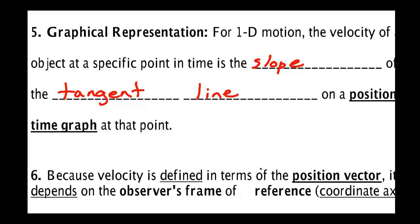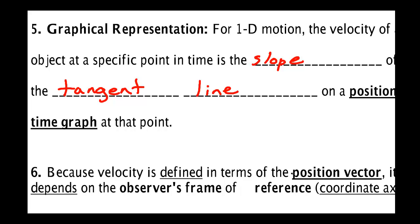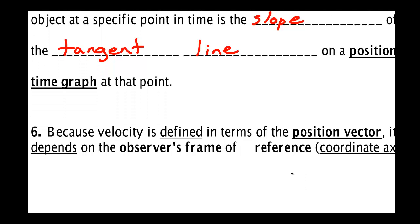Because velocity is defined in terms of the position vector, it depends on an observer's frame of reference — it depends on the coordinate axis. For instance, on Earth I believe I'm stationary sitting in my chair because I've attached my reference frame to the Earth. But a person in outer space would see me moving. So the velocity depends on what your coordinate axis is.